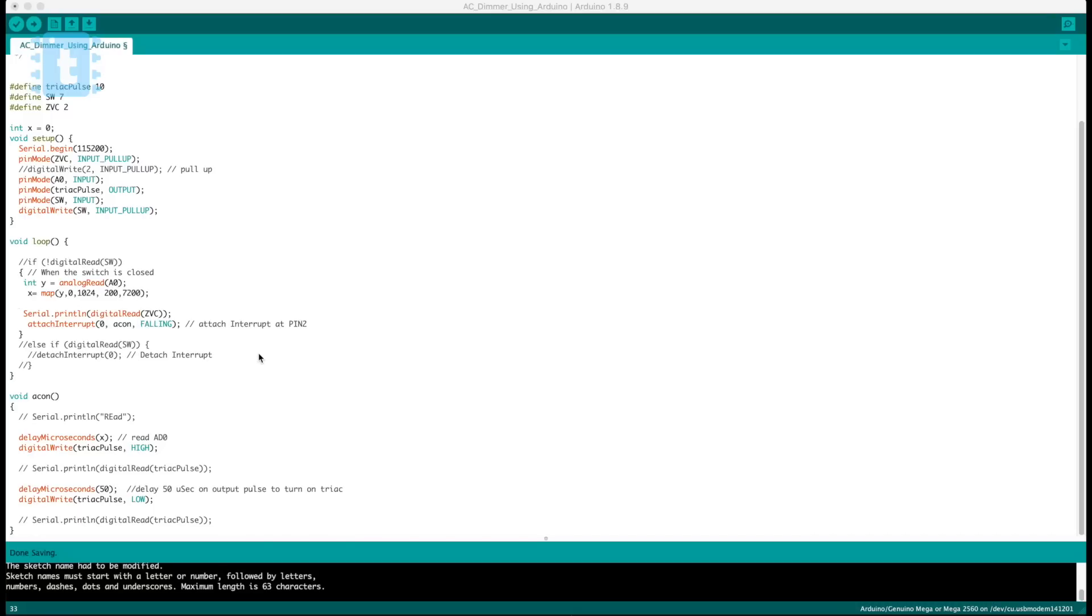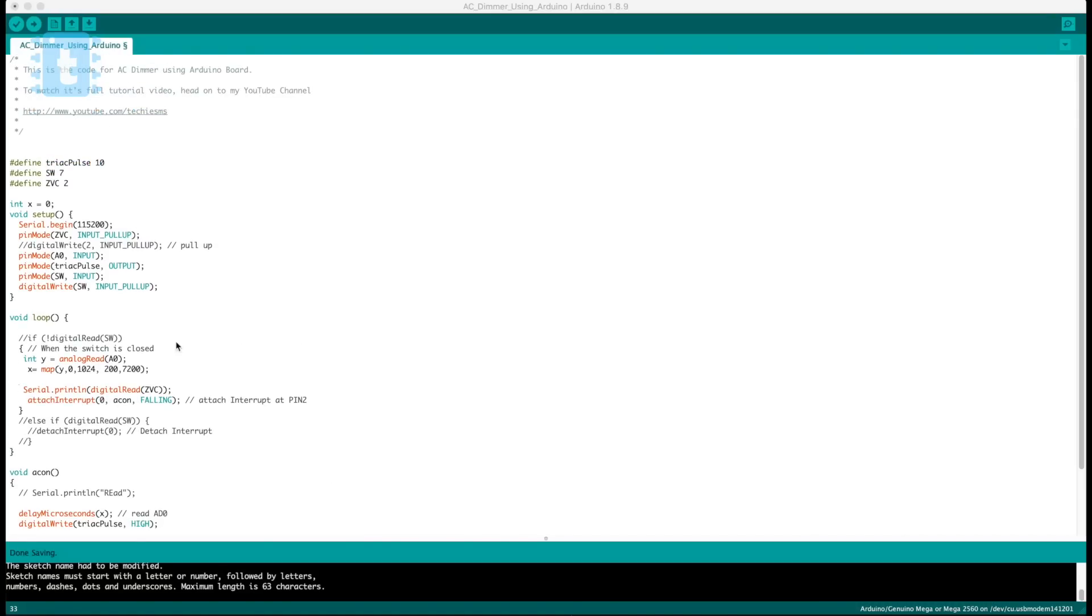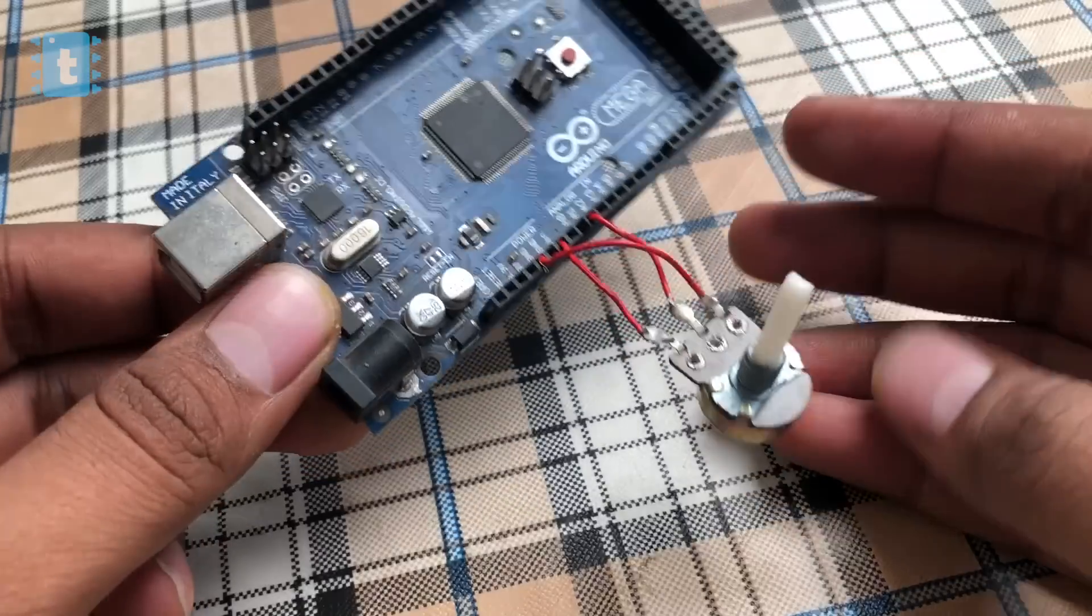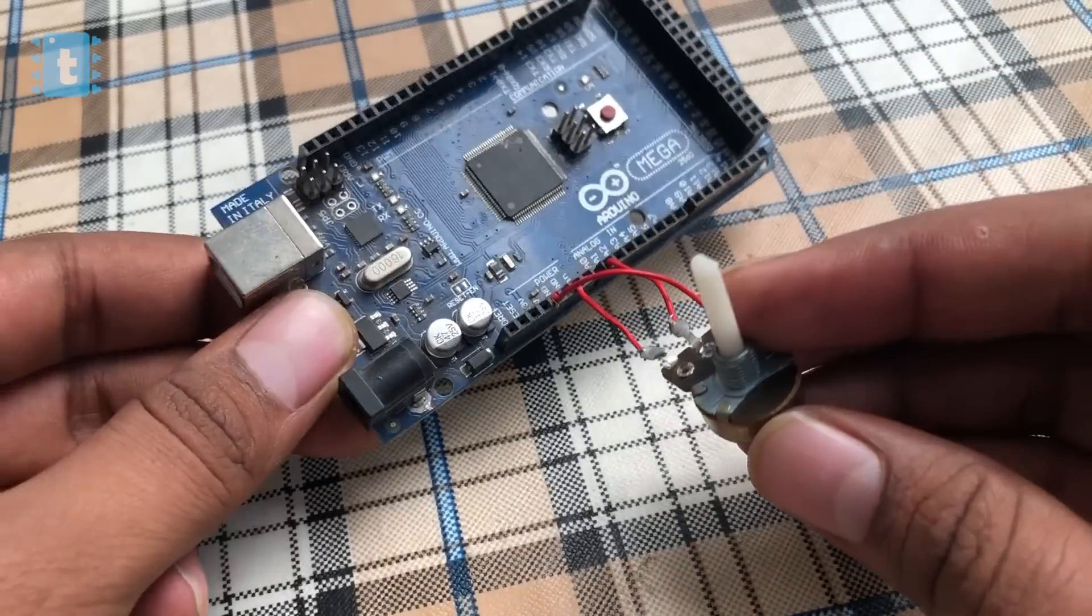Now after uploading the code I just made the connection of Arduino board with the AC dimmer circuit and I also attached one potentiometer to change the TRIAC triggering timing. So everything seems perfect, now let's see everything in action.